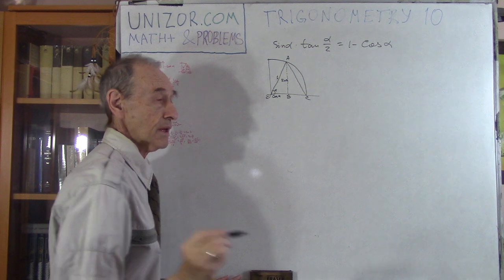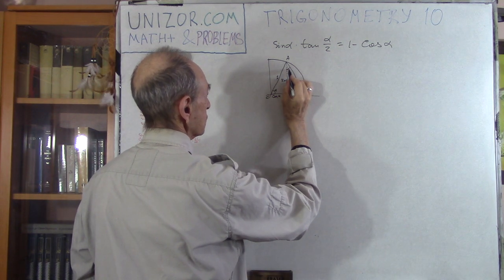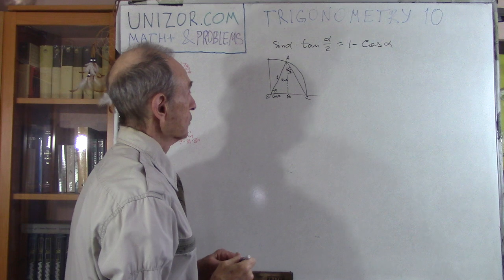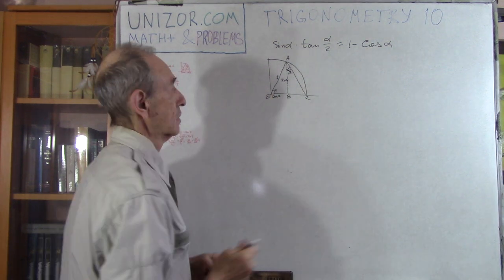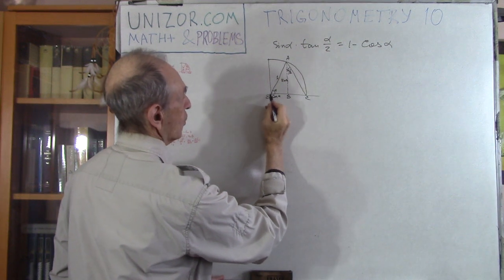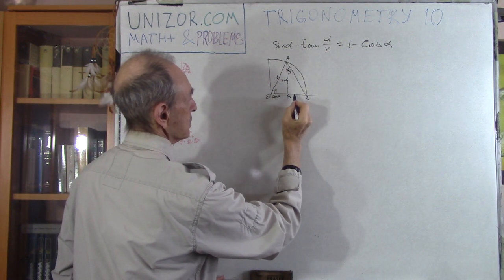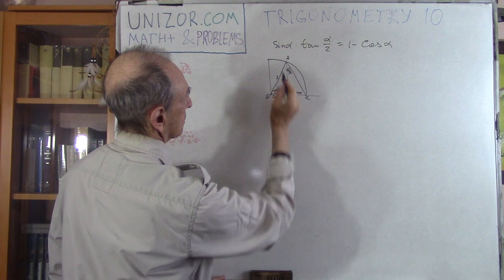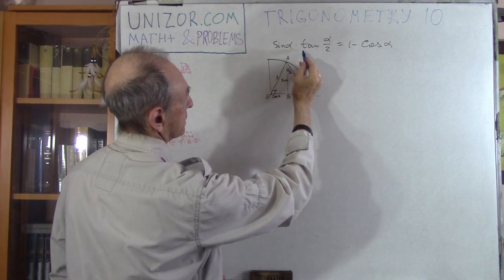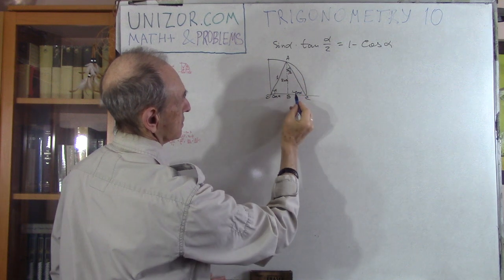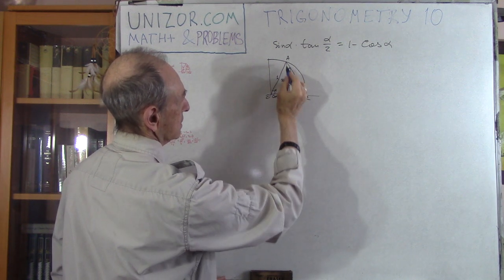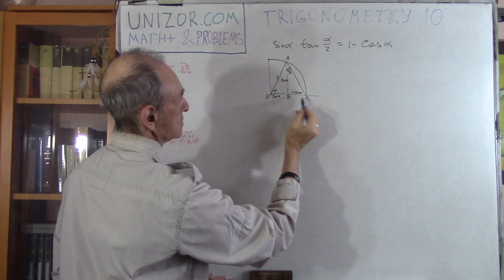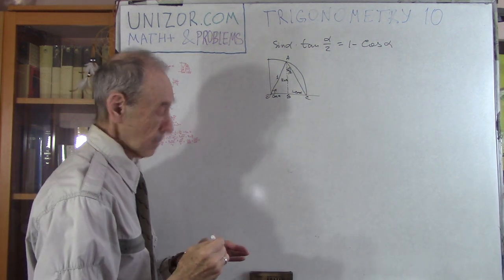What I'm saying now is this is the beginning of the proof. This angle is alpha over 2. We have proven that this is alpha over 2. If OB is cosine, then BC is obviously 1 minus cosine. If you multiply sine by tangent of this angle — and tangent is the ratio between BC and AB — then you will get BC. So AB times tangent of this angle equals BC, and that would prove our identity.